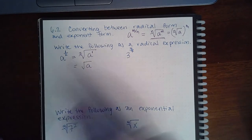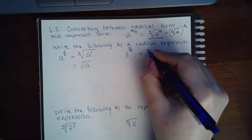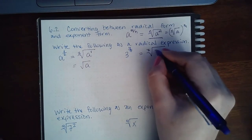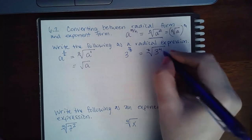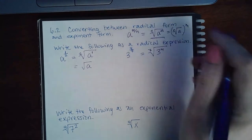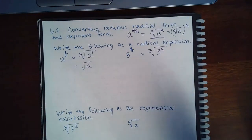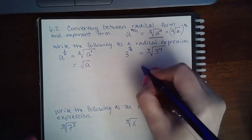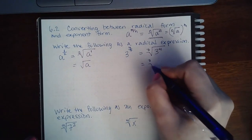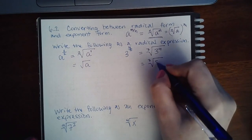Now for this problem, the denominator is the index and the numerator is going to be my exponent. And then the only thing I can do here is actually do 3 to the 4th power, which is 81.